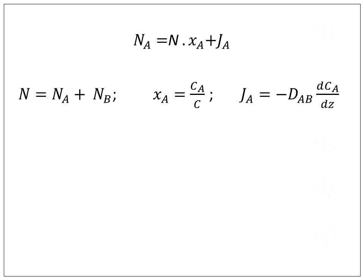Where we know that N is the sum of Na and Nb, xA is the ratio of CA and C, and from Fick's first law of diffusion, JA equals minus DAB dCA by dZ.